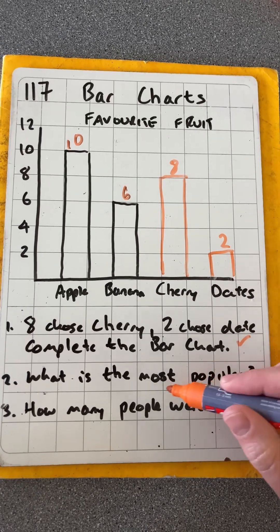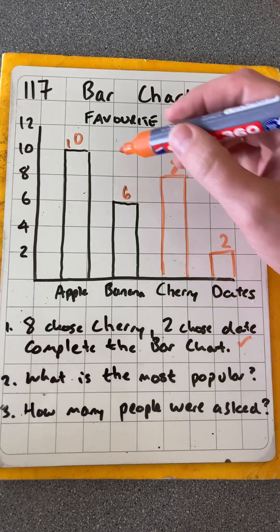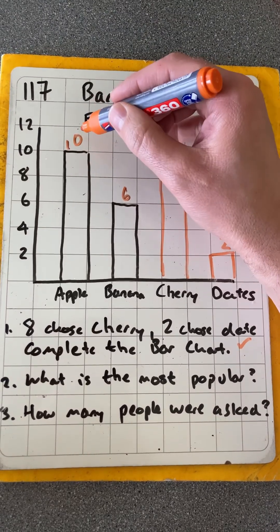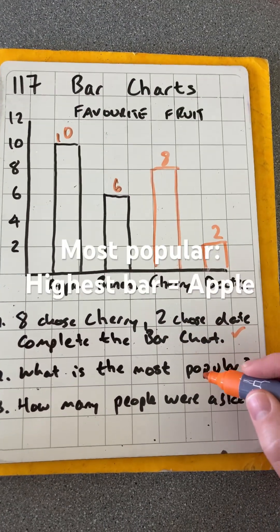Then it says what is the most popular. We always look for the highest bar, and that's 10. So that will be apple.